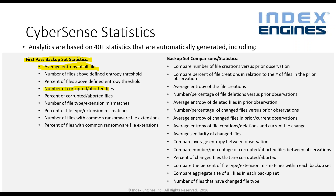We also look at corrupt or aborted files — files that have been corrupted, maybe zero-byte-character files. We also look at file type and extension mismatch. Some ransomware attacks strip out the extension of a Word document, making it something like .Loki. CyberSense will look at the header of the Word doc and determine that it is a Word doc but the extension does not match. On the first pass, with the first population in the vault, the analysis determines with 95% accuracy that the data is either corrupted or clean.